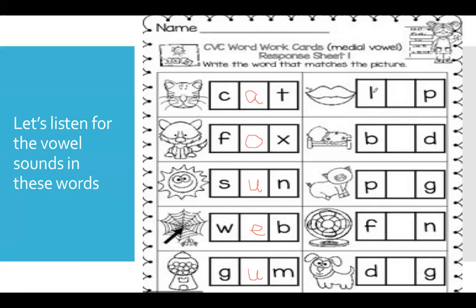Lip. L-I-P. What letter makes the sound 'ih' for igloo? The letter I makes the sound 'ih.' What about bed? B-E-D. What letter makes the sound 'eh'? The letter E makes the sound 'eh.'